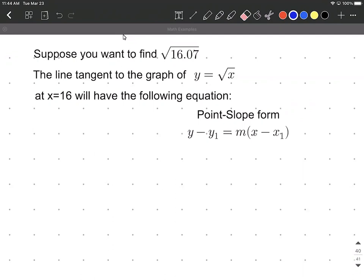All right, so what we want to do is we're going to start with the function y equals the square root of x, because we're dealing with a square root here. And then we're going to evaluate this at 16. We're going to use this x value because it's very close to 16.07.